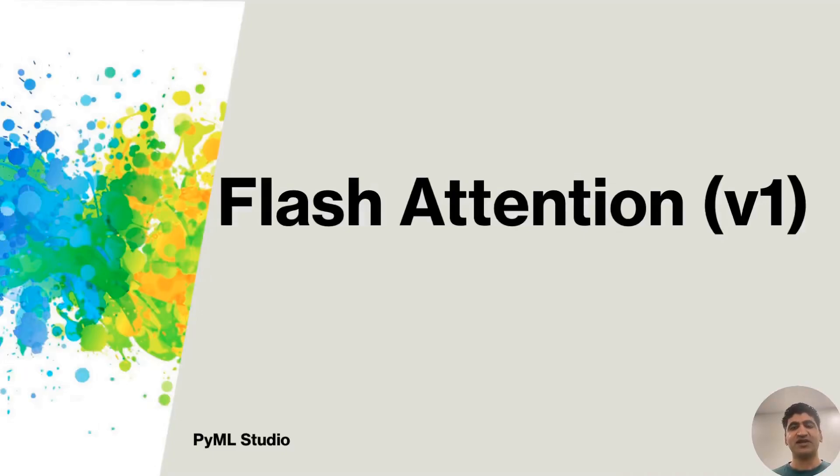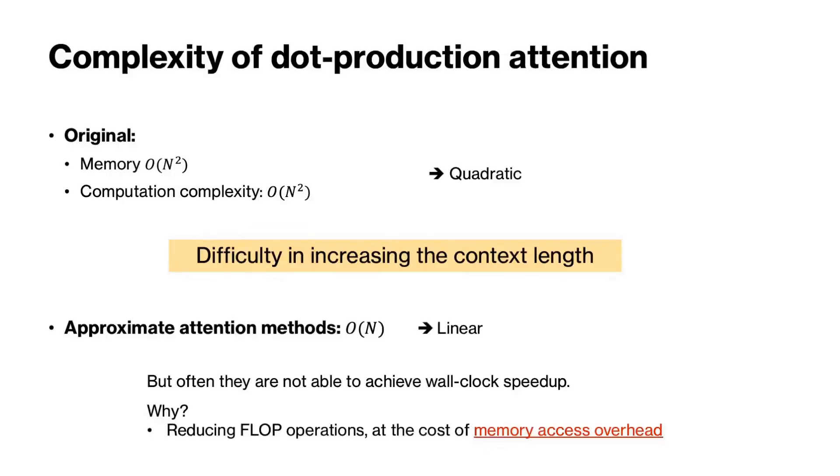Hi everyone, we are back with another video in the transformer series. In this video we'll cover flash attention, which is a major advancement in the development of LLMs. In a previous video we discussed that the complexity of dot product attention is quadratic with respect to sequence length, which causes difficulty in increasing the context length.